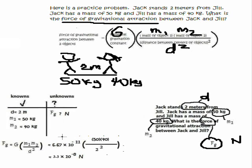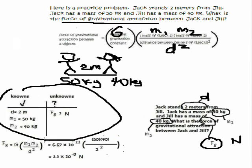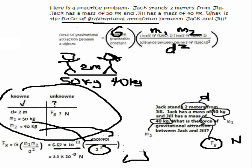So once you put this in a table, it should be easy to see exactly where all the values go. So we've got our G, we've got our M1, we've got our M2, and then our distance right here. We've got to not forget to square that. That's your X to the 2 button in your calculator.